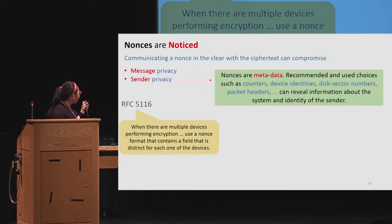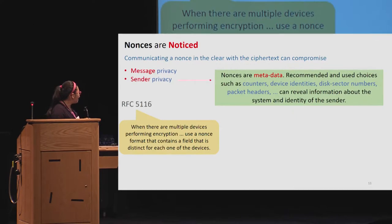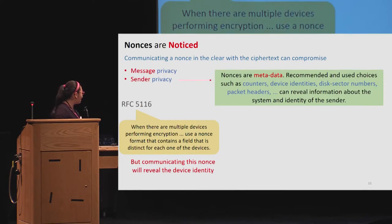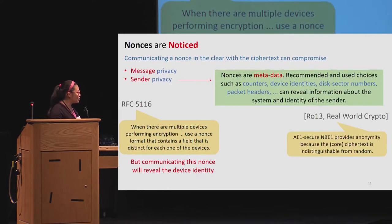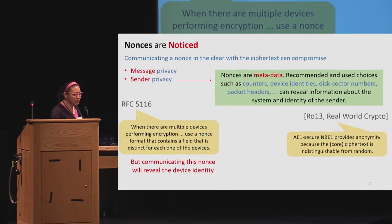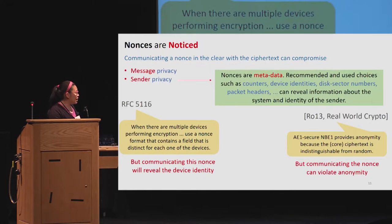RFC 5116 recommends that part of your nonce should be made up of a device-specific identifier, which would obviously allow an adversary to tell which device you're sending from if you're sending the nonce in the clear. We note also that because NBE1 is supposed to be indistinguishable from random, it's supposed to give you anonymity for free — but if you then go and send the nonce with it, you've kind of defeated the whole point.